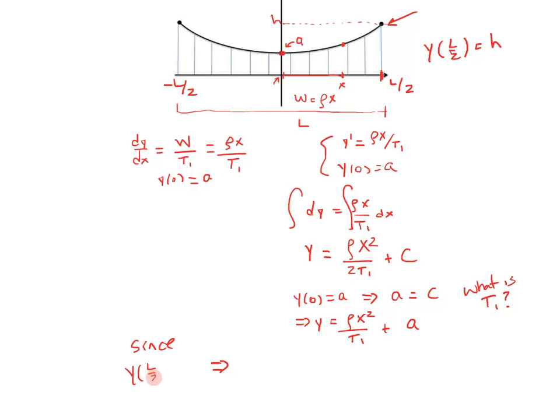Since y at L over 2 is equal to h, we can say h equals rho of L over 2 squared divided by t1 plus A. And then solve that for t1. And then plug that t1 in here. And I'm going to skip all the algebra. It's actually pretty easy to do. But, again, what I'm going to do is I'm going to solve for t1 and then substitute back into this equation right here. So, some math occurs here. And you end up with y turns out to be 4h over L squared x squared plus A.